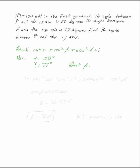Here alpha is 20, gamma is 77, and we want beta. Solving for cosine squared beta, we have 1 minus cosine squared 20 minus cosine squared 77 equals 0.066375, which equals cosine squared beta.